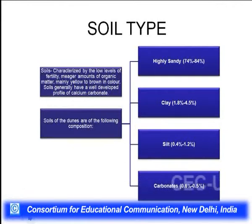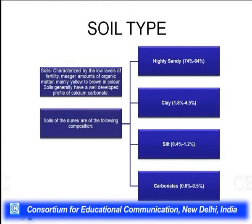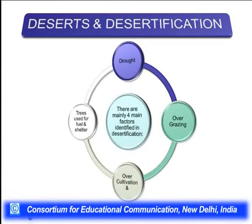Desert soils are generally characterized by low levels of fertility, more existence of dunes and sands, and very little fertile land. The soil composition is highly sandy — 74 to 84 percent sand, clay only 1.8 to 4.5 percent, silt 0.4 to 1.2 percent, and carbonate 0.6 to 0.5 percent. This explains why we have frequent desertification, as drought is a very frequent phenomenon and accelerates the process of desertification.